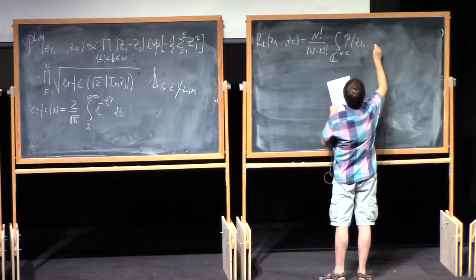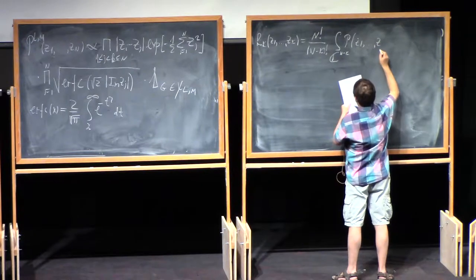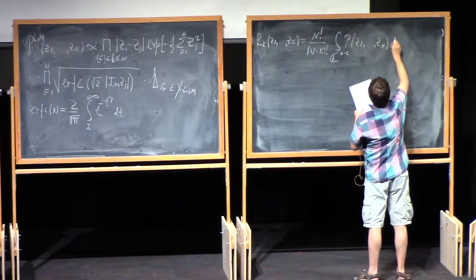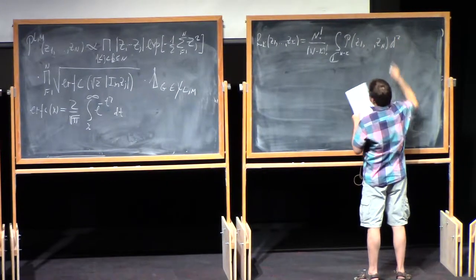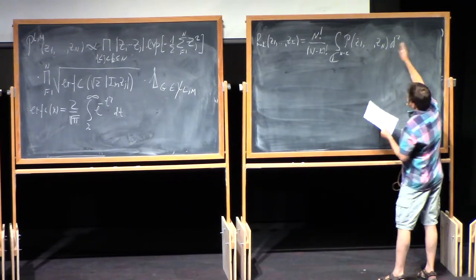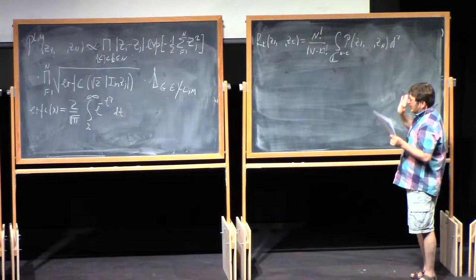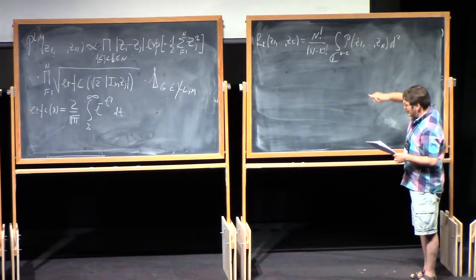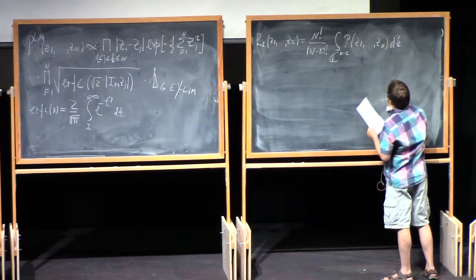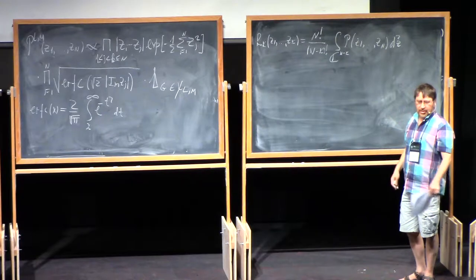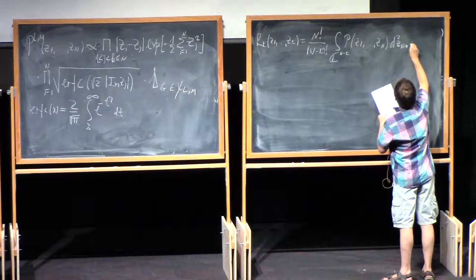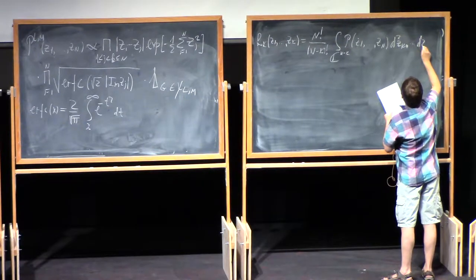With some qualification — I should explain in a moment. I use d²z to denote integration in the complex plane. Some other people just use dz, but I usually reserve dz for contour integration. So d²z means you integrate independently over dx and dy. Then d²z_{k+1} through d²z_n.